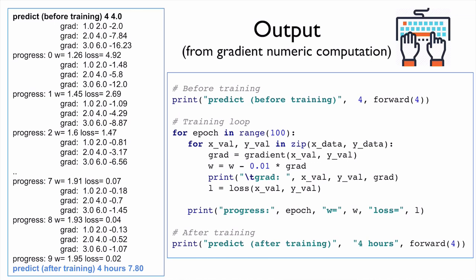At the beginning, we ask what will be the points if I study four hours. It's sort of a completely random wrong value. But as time goes on, as the progress move in, then you see the loss value is getting smaller and smaller. And then the W value is getting towards to 2. We know that 2 is the right W value.